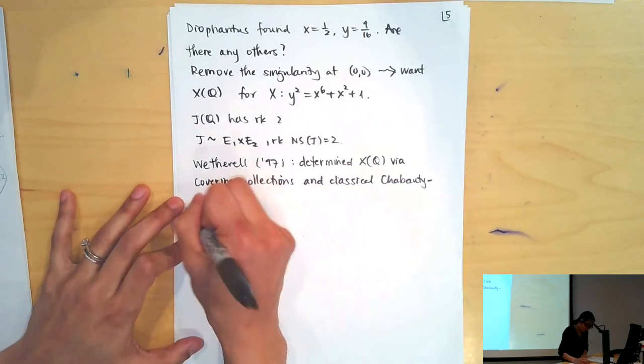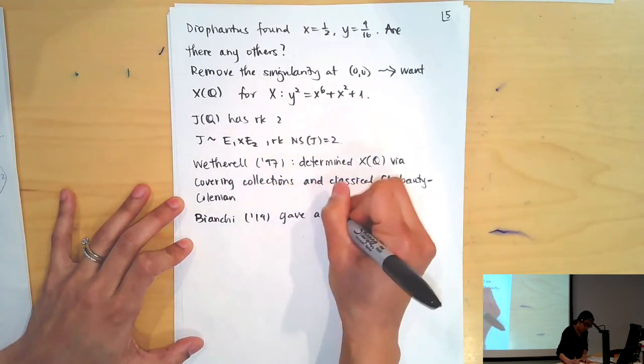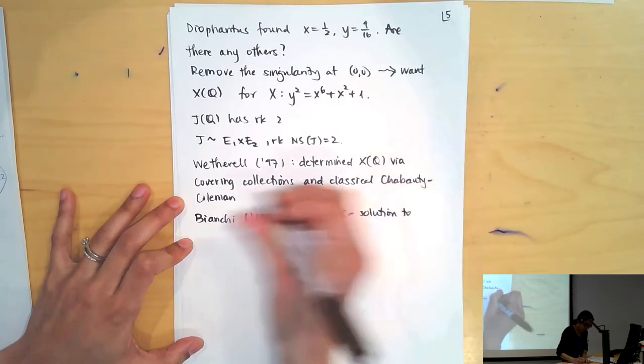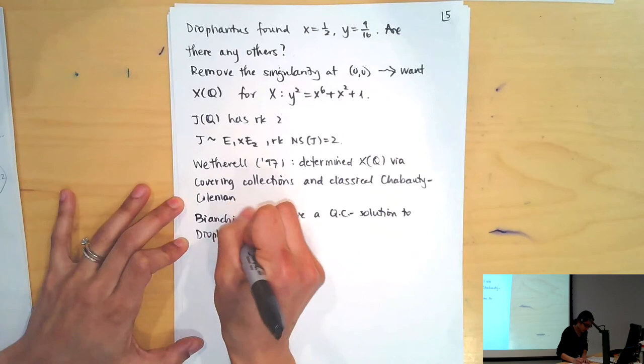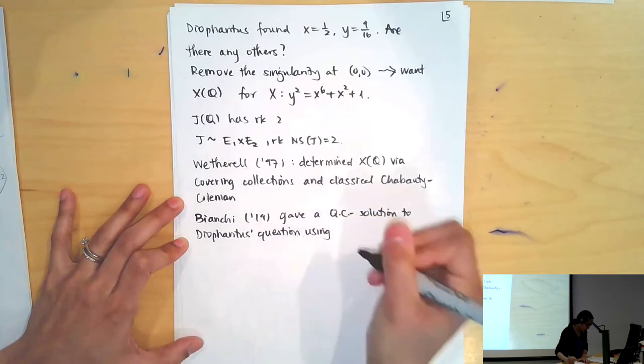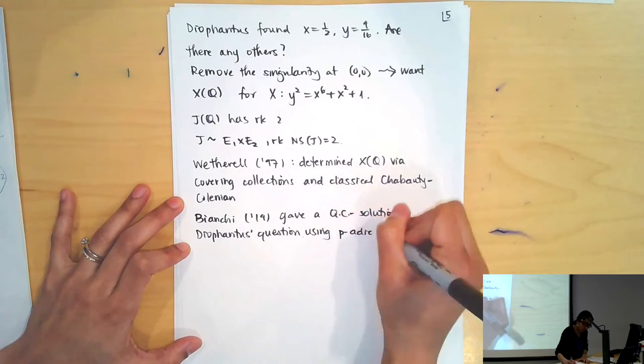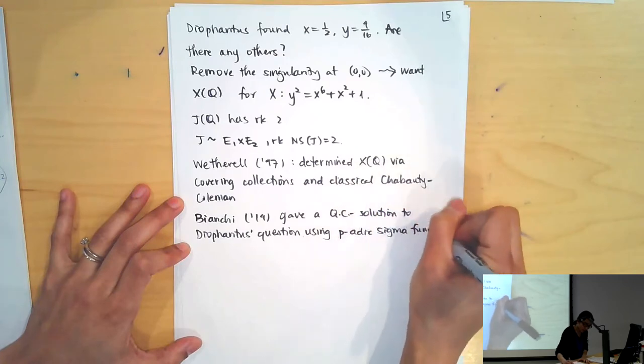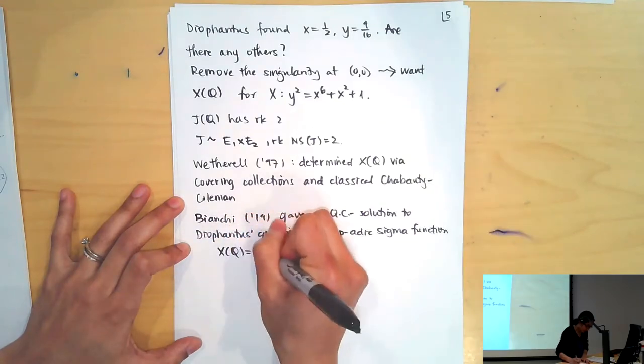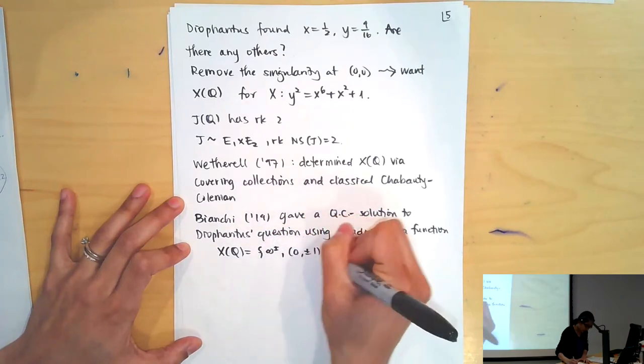Very briefly, he constructed two covers of genus 5, then quotiented out to get two covers of genus 3 that turned out to be hyperelliptic. One had rank 0 and one had rank 1, so he applied Chabouty-Coleman and determined the set of rational points in those genus 3 curves. More recently, Francesca Bianchi gave a quadratic Chabouty solution to Diophantus' question.